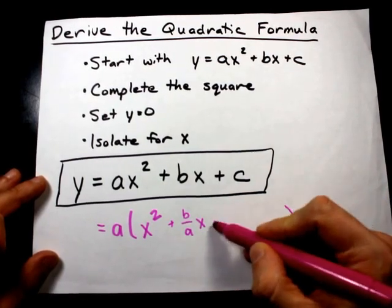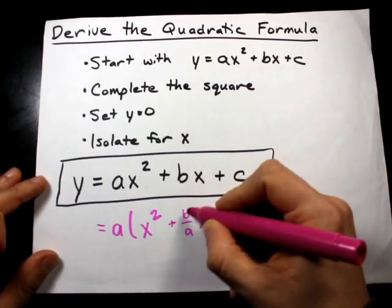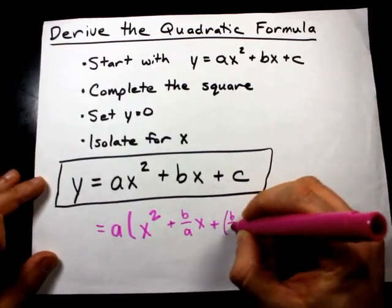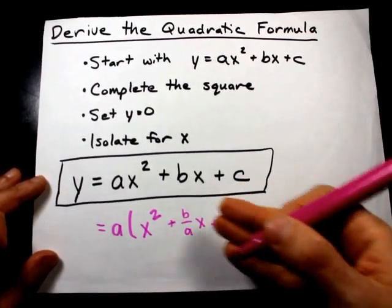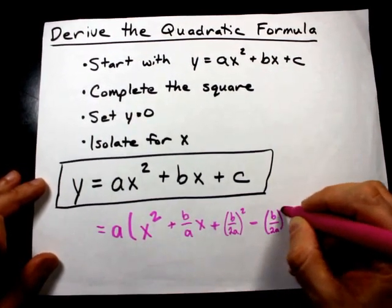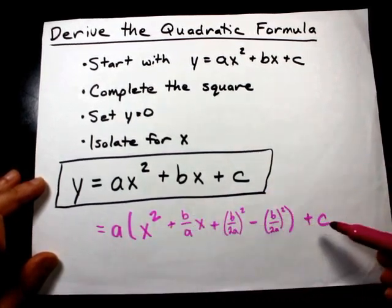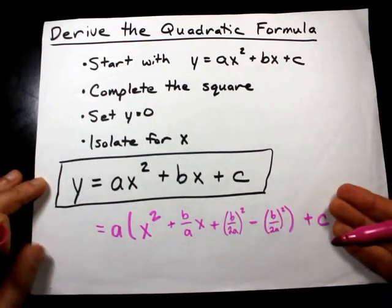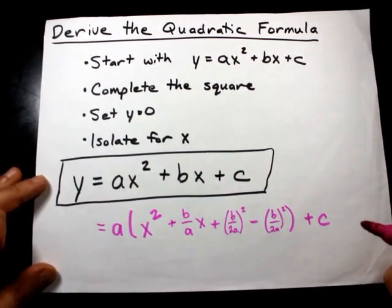Now, the thing that gets added and subtracted within the brackets is usually half of this number squared. Well, that's going to be b over 2a, and I'm just going to square it because that's how you complete the square. And that b over 2a squared is both added and subtracted, so really there's no net change in what's going on here. These two technically cancel, but don't cancel them. The reason we've done this is to turn the first three terms of the bracket into a perfect square trinomial.